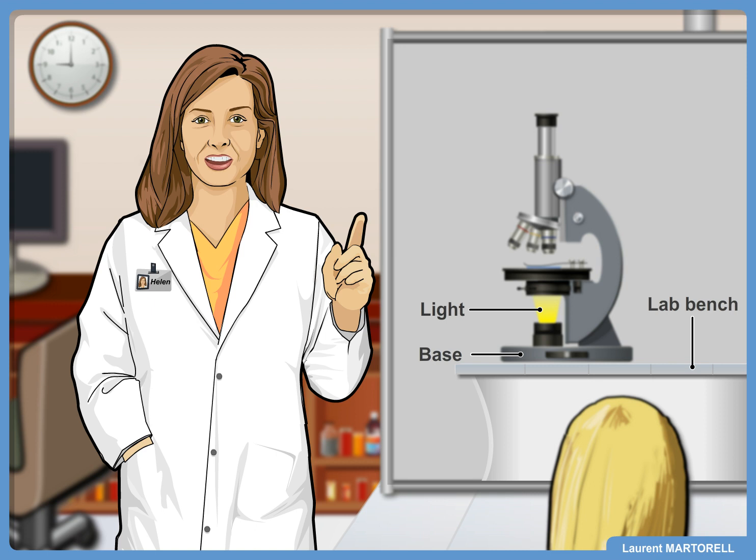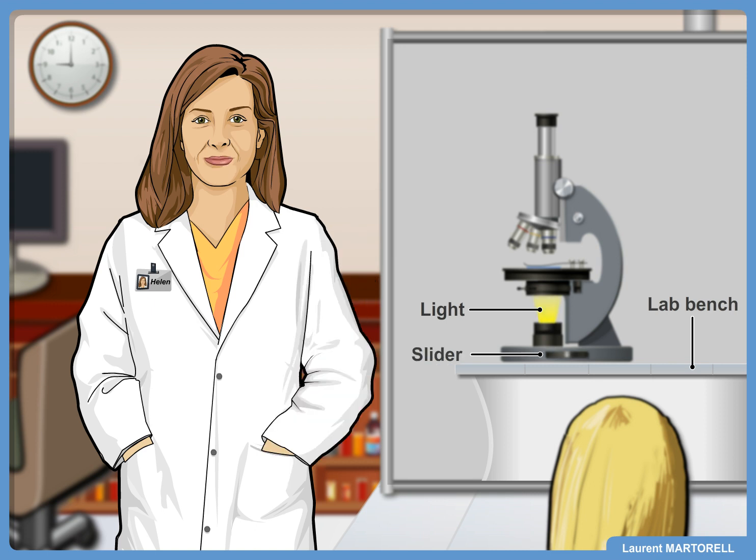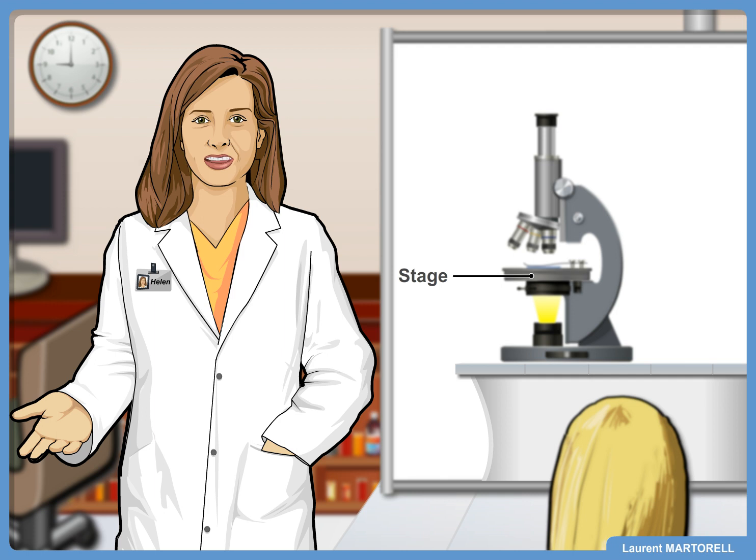The next part is the stage. The stage is the flat area that holds the slide. At the center of the stage is a hole that allows the light to pass through. It also has stage clips to hold the slide in place.